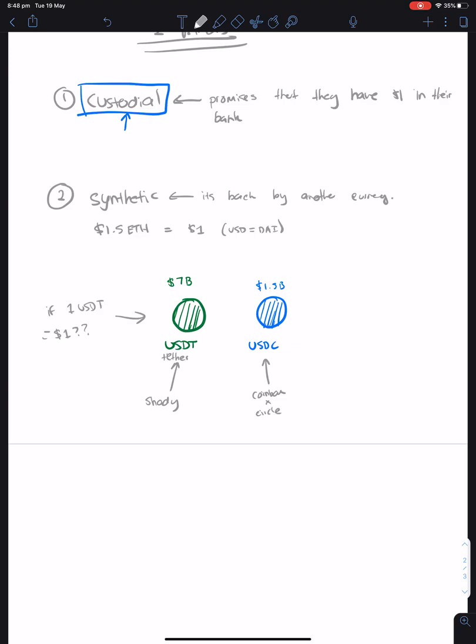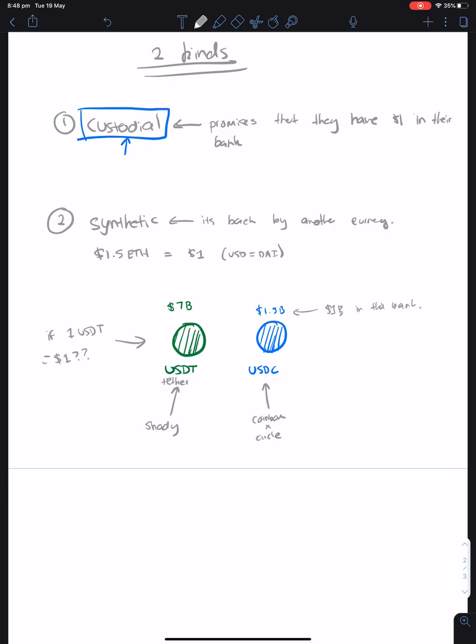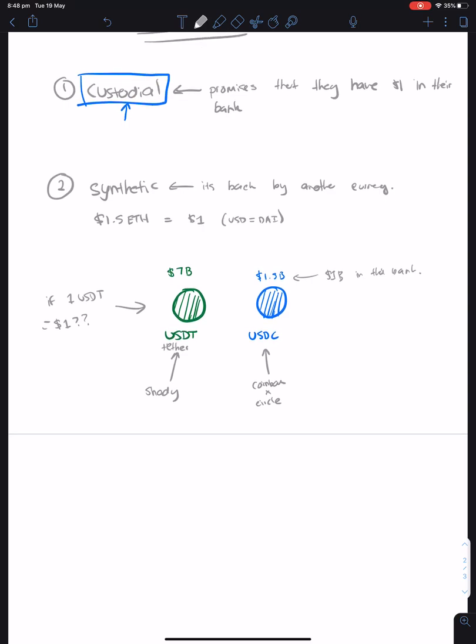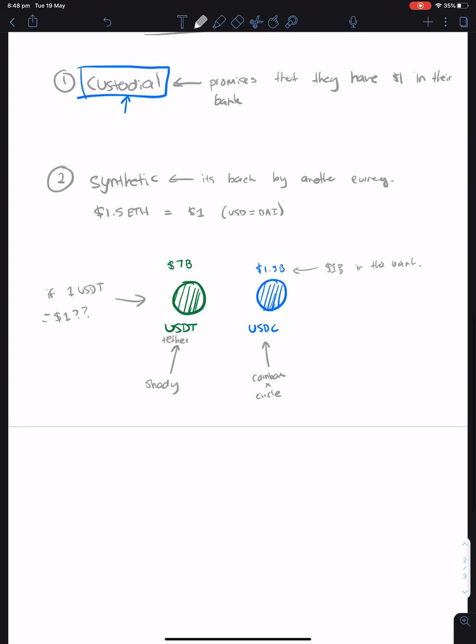USDC on the other hand is run by Coinbase and a company called Circle, two very reputable organizations in the space. They actually have public audits that show every dollar in the bank equals a dollar. If there's 1.5 billion dollars worth of USDC circulating, there's 1.5 billion dollars in their bank. They provide audit reports and they're a regulated US entity, so you can trust them.